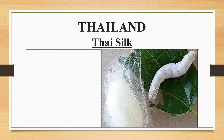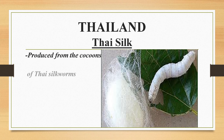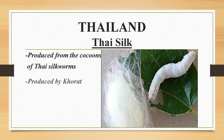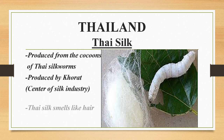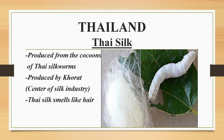Let us now discuss the fabric of Thailand. We have Thai silk. It is produced from the cocoons of Thai silkworms. It is produced by Korath, which is the center of the silk industry. And Thai silk smells like hair when burnt.